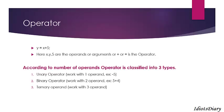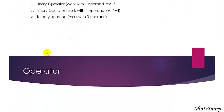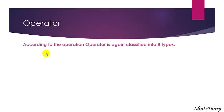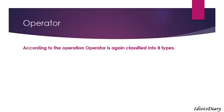And the next type of operators are called ternary operators, which require three operands. We will discuss about the ternary operator in a few minutes. According to the operations, operators are again grouped into eight categories.